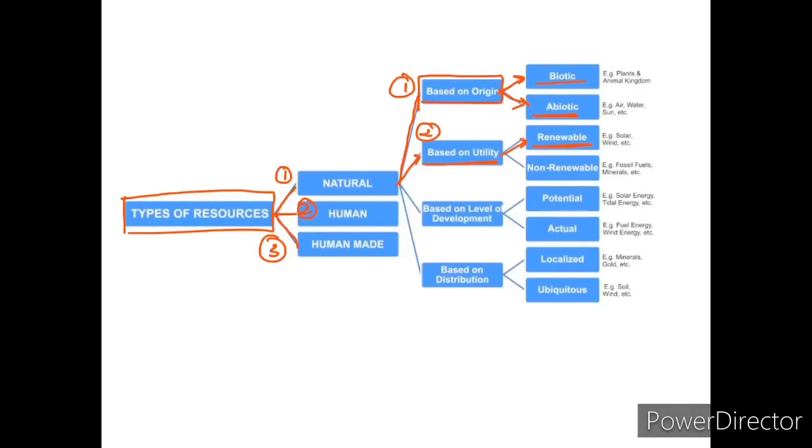Next, resources are classified based on utility, which is again divided into renewable and non-renewable resources. Third classification is based on level of development, which is further classified into potential and actual resources.